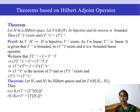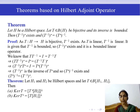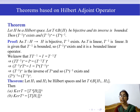Since T is bijective, its inverse T⁻¹ exists. Since T is linear, T⁻¹ is also linear, and it is given that T⁻¹ is bounded. So T⁻¹ is a bounded linear operator on Hilbert space H. By the existence theorem, the Hilbert adjoint operator T⁻¹* exists and is a bounded linear operator.